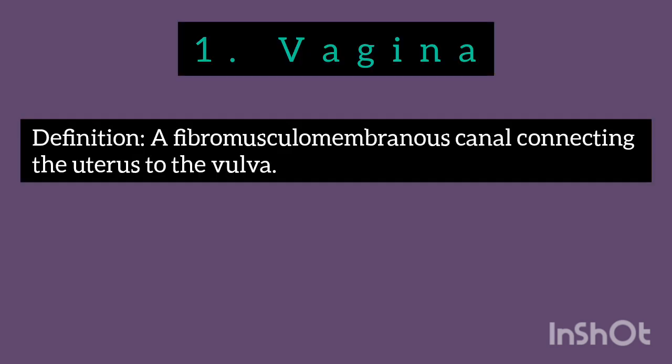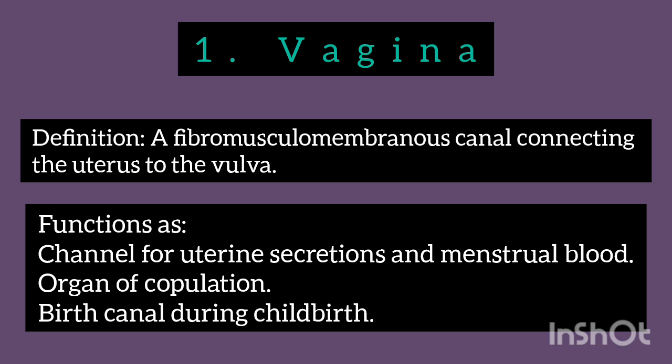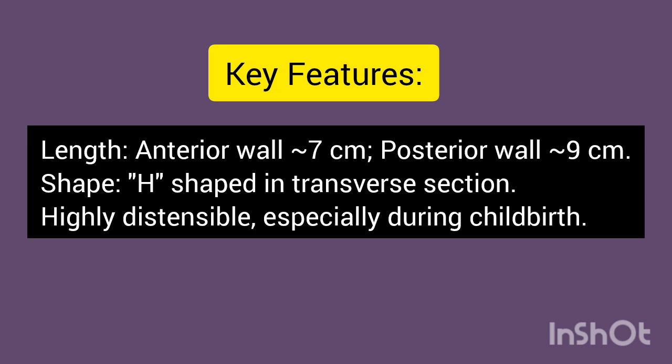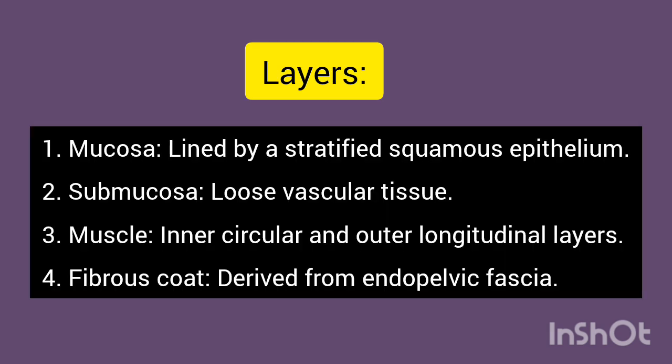1. Vagina: A fibromuscular membranous canal connecting the uterus to the vulva. Functions as a channel for uterine secretions and menstrual blood, organ of copulation, and birth canal during childbirth. Key features: Length — anterior wall 7 cm, posterior wall 9 cm; shape is H-shaped in transverse section; highly distensible, especially during childbirth. Layers: 1. Mucosa — lined by stratified squamous epithelium; 2. Submucosa — loose vascular tissue; 3. Muscle — inner circular and outer longitudinal layers; 4. Fibrous coat — derived from endopelvic fascia.